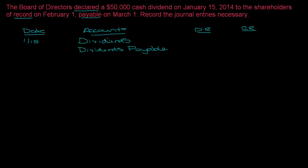The dividend is $50,000. Dividends is a contra equity account, which means it acts the opposite way that most equity accounts do — the normal balance in a contra equity account is a debit. So when we declare the $50,000 dividend we have a $50,000 debit to Dividends. Dividends Payable is a liability account, so to increase it we credit the account $50,000. That takes care of the declaration.